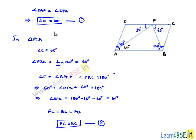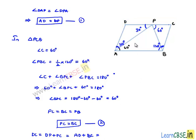PC is equal to BC. This is the second proof. Now adding equations 1 and 2, DC equals DP plus PC, which equals AD plus BC. Since in a parallelogram opposite sides are equal, AD equals BC. Therefore DC equals AD plus AD, which is equal to 2 times AD. So we have proved that DC is equal to 2AD. This is the third proof.